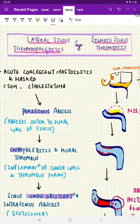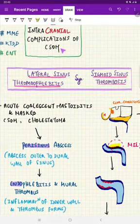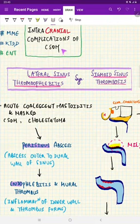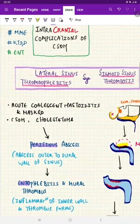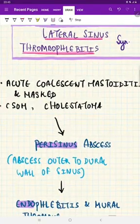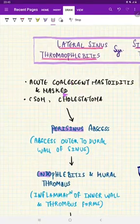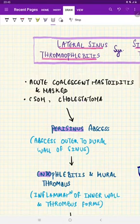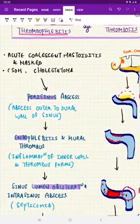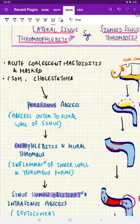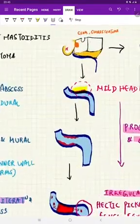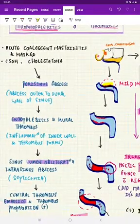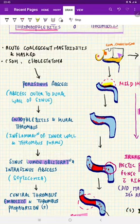Coming to the discussion proper, lateral sinus thrombophlebitis is something to deal with dural venous sinus. Now we are dealing with chronic suppurative otitis media, it means the ear and dural venous sinus are connected. What makes it involved? Acute coalescent mastoiditis, masked mastoiditis, CSOM, and cholesteatoma—these are all the factors or the pathology that is going to cause lateral sinus thrombophlebitis as a complication.